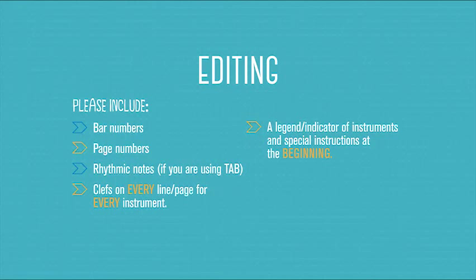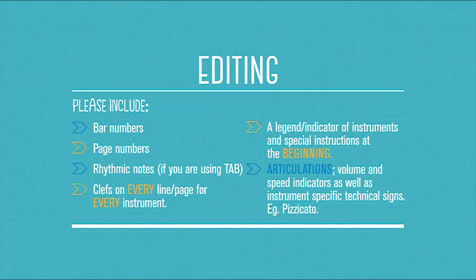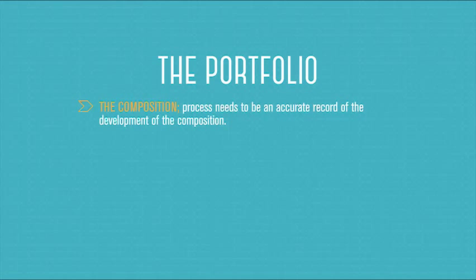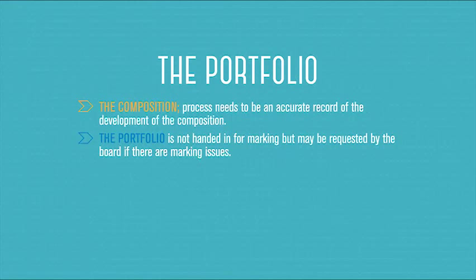Articulations need to go onto your copies as well. These are the volume and speed indicators as well as instrument-specific technical signs — for example, pizzicato and staccato. Your portfolio is the other part of the compositional process. It is a document record of how you went about your composition and is a compulsory exercise. The compositional process needs to be an accurate record of the development of your composition. The portfolio is not handed in for marking but may be requested by the Board of Studies if there are marking issues.